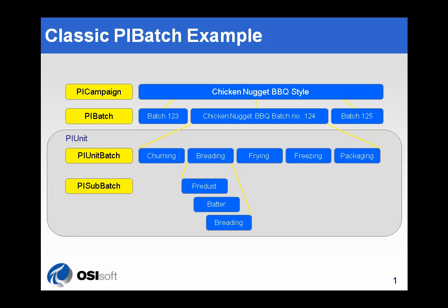Let me show you a classic example we've shown for years. Imagine that you've got your production cycles sliced into campaigns. Those campaigns were further divided into individual batches of end products. For example, we've got chicken nuggets here, and here is a specific batch of chicken nuggets, number 124. Within that, what we're calling a pie batch, you will also divide that further into what we call unit batches — the different procedures that you do to produce this batch of product.